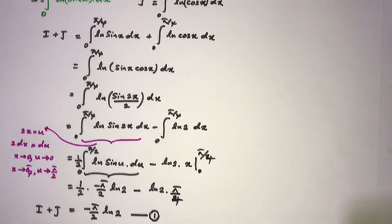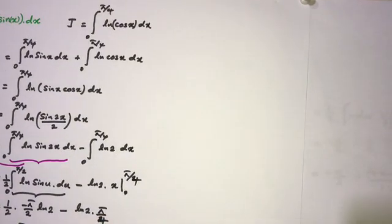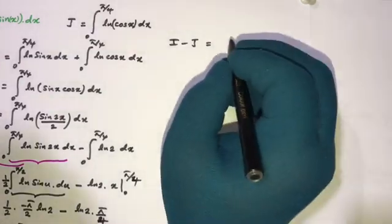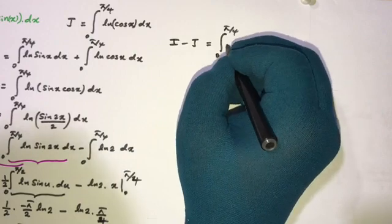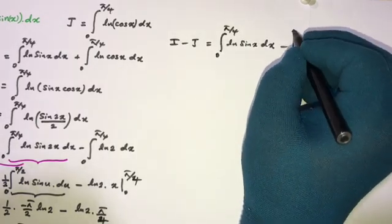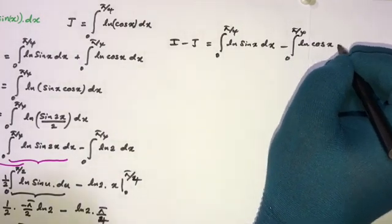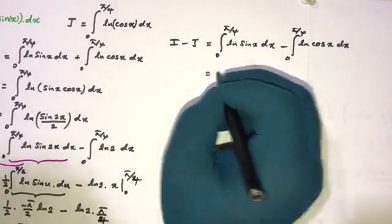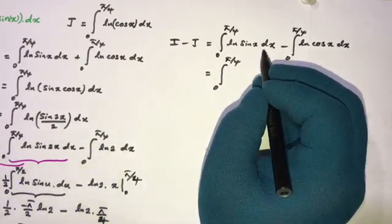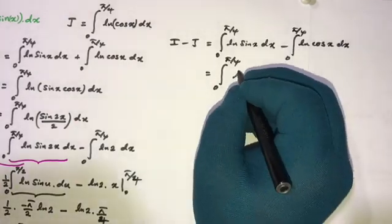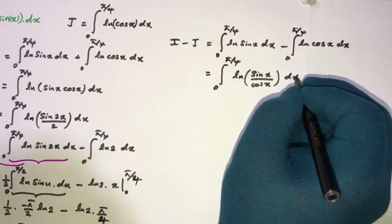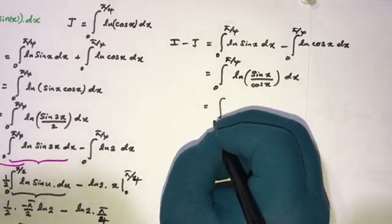Now I am going to take I minus J. We write it as the integral from 0 to π/4 of ln(sin x) dx minus the integral from 0 to π/4 of ln(cos x) dx. With the same limits, this becomes a single integral from 0 to π/4 of ln(sin x) minus ln(cos x) dx, which by log properties equals ln(sin x / cos x).